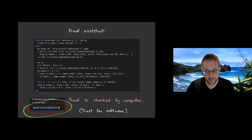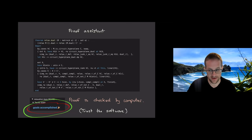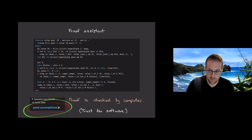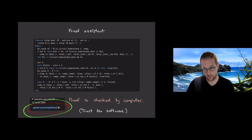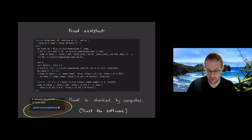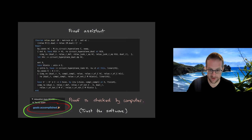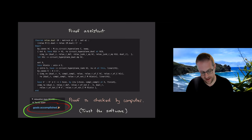Every line follows from the previous one by axioms. If you give me a long proof written in this way and I run it through a proof assistant and it tells me it's correct, I don't have to trust you or myself. You're giving me code, but all I'm trusting is that the proof checker is actually checking things correctly — that what it's doing is mathematically sound. So I'm trusting whoever wrote the proof checker.